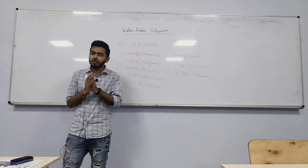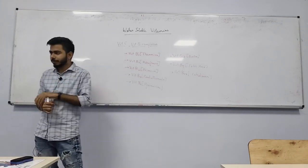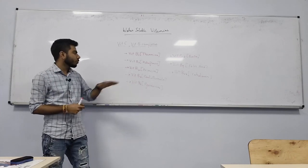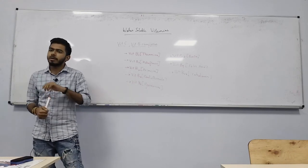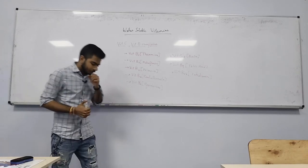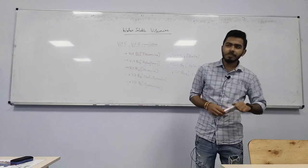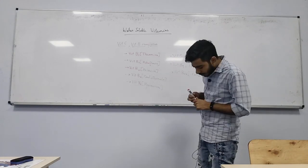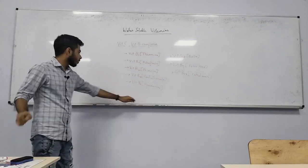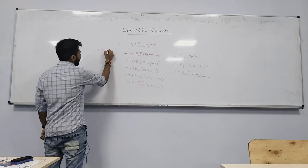So, to summarize water-soluble vitamins: we have vitamin C and the vitamin B complexes — B1, B2, B3, B5, B6, B7, B9, and B12. Let's start with vitamin C, which is also called ascorbic acid.